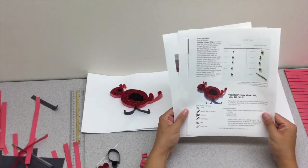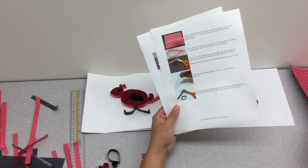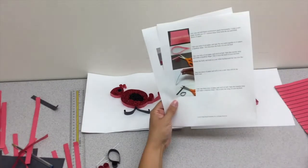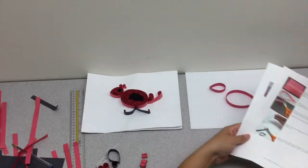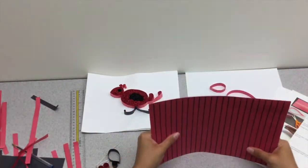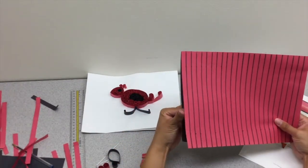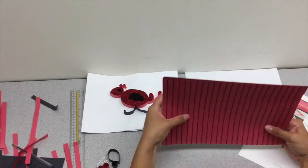From the PDF directions, your first step is to gather your construction paper. You'll have two sheets of red and one sheet of black.